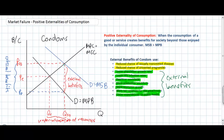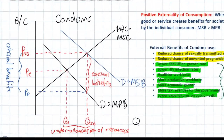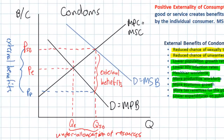Given our current situation, we can see that there is a potential welfare gain in the market for condoms. At the current equilibrium quantity QE, the marginal social benefit is much greater than the marginal social cost, indicating a loss of welfare equal to the yellow triangle shown here. Another way to think of this yellow triangle is the potential welfare gain — if demand for condoms could somehow be increased from MPB to MSB, this triangle would be realized as an increase in welfare.